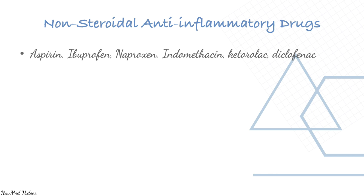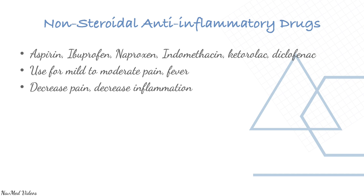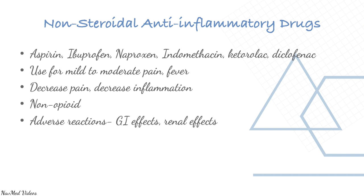Aspirin, ibuprofen, naproxen, and indomethacin are NSAIDs used for mild to moderate pain or fever — they decrease pain and inflammation. Non-opioid adverse reactions include GI and renal effects.